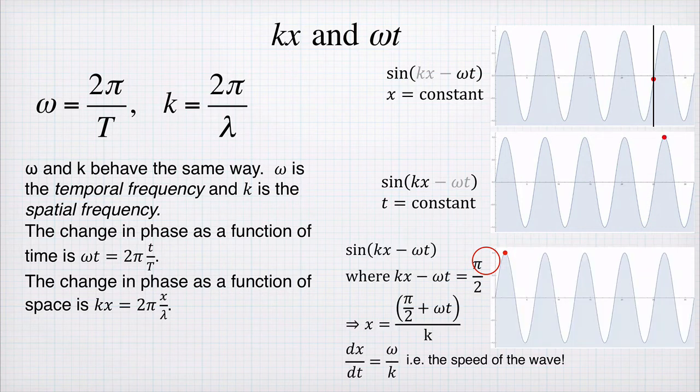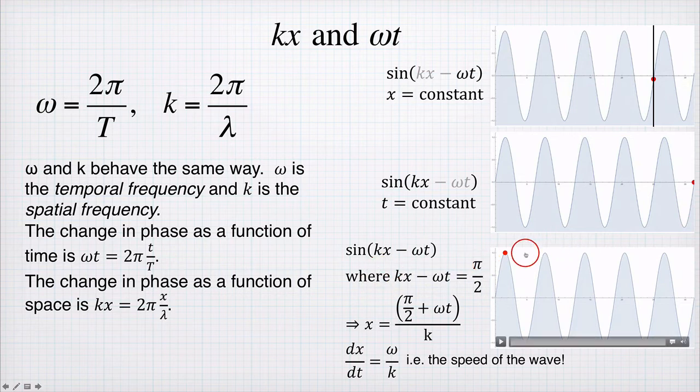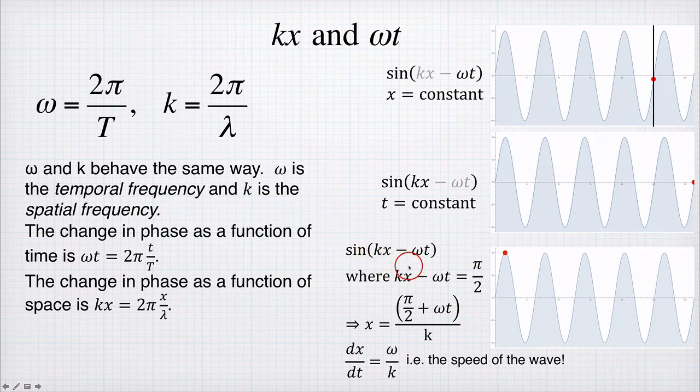And if we wish, we can do some combination of this. We can have x and t changing simultaneously to give us some other function for the position of this dot. So one particularly interesting example is if kx minus ωt is a constant. So we set kx minus ωt to be, in this case, π on 2.